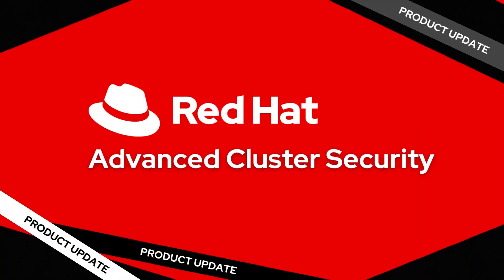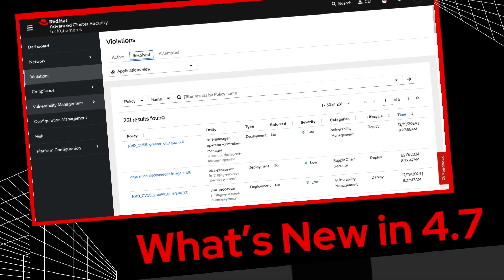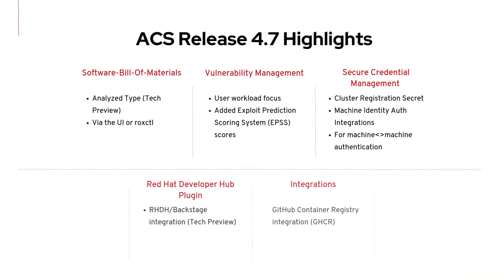Hello and welcome to the Red Hat Advanced Cluster Security for Kubernetes Product Update, also known as what's new in 4.7. 4.7 is a packed release filled with new features such as software bill of materials generation or SBOM generation, updates to vulnerability management workflows and secure credential management in ACS, and integrations with Red Hat Developer Hub and GitHub Container Registry.